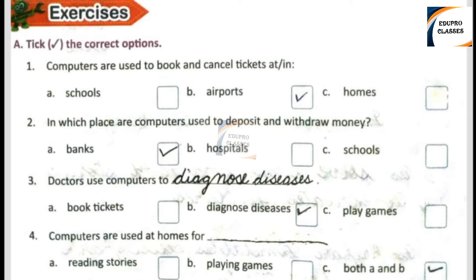Number 3: Doctors use computers to blank. Option A: Book tickets. Option B: Diagnose disease. Option C: Play games. Option B is the right answer.